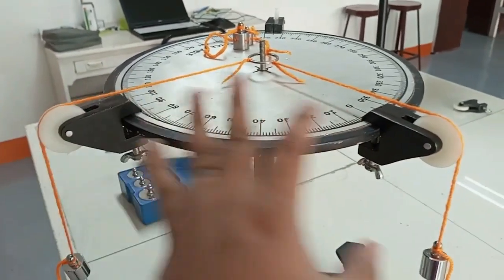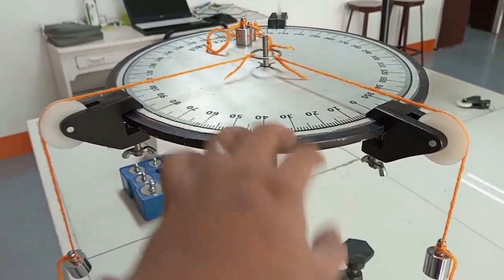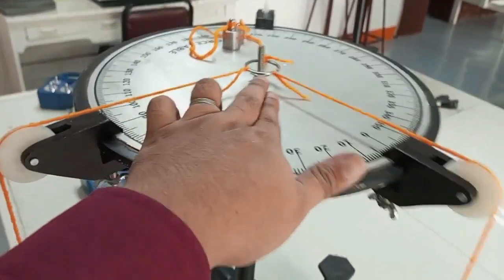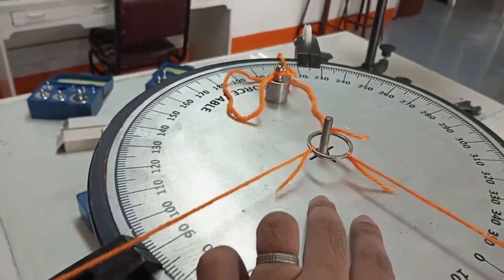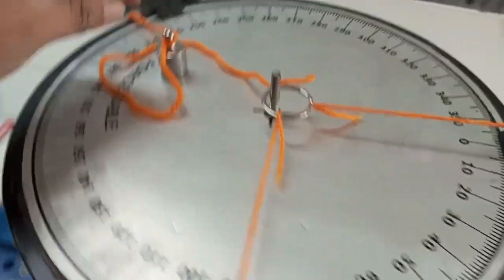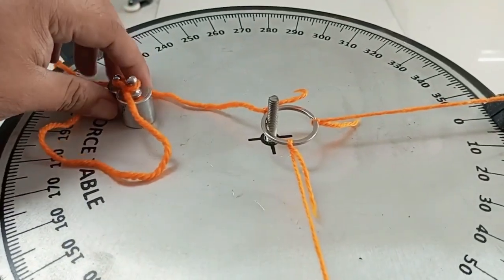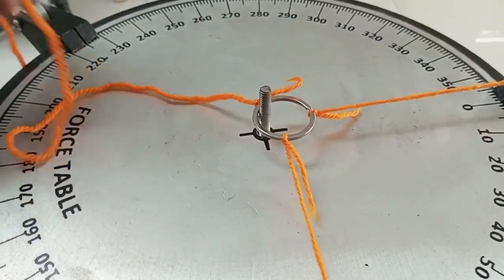Basically, if it is balanced, the ring would be at the centermost part. It's not at the centermost part, so I'm going to hang the third mass or set of masses right here.